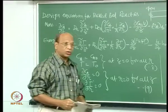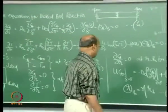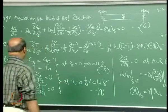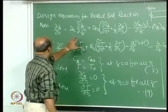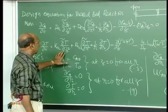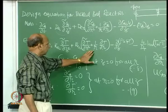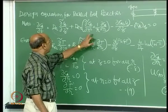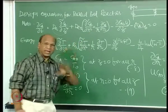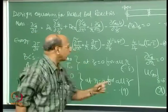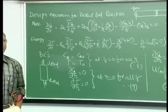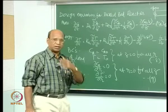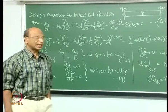I want to finish packed beds and then start fluidized beds. From equations 6 and 7, we can choose which terms apply: if axial dispersion is not important, those terms may not be there. If radial dispersion is important, those terms will be there in both equations, because both mass and energy balances are connected. But under one condition — the adiabatic reactor — they may not both be connected. For an adiabatic reactor, there is no heat input or removal through the walls.